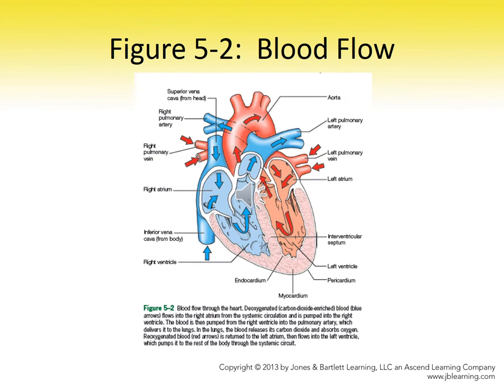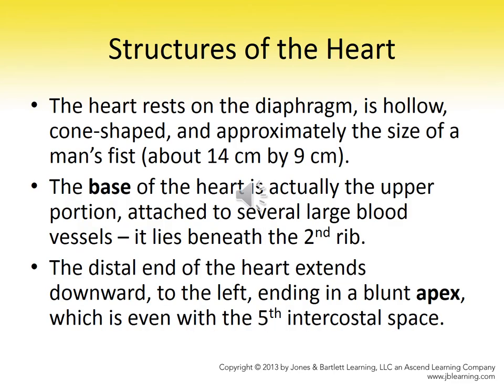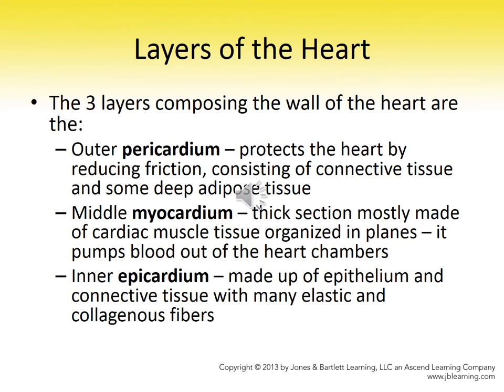From the aorta, blood flows through arteries, arterioles, capillaries, venules, and veins back through the vena cava into the right atrium, right ventricle, out to the lungs, back to the left atrium, down into the left ventricle, out through the aorta — through arteries, arterioles, capillaries, venules, and veins — to start the process all over again.